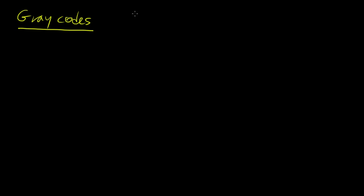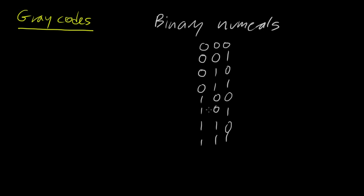Gray codes are different than the traditional binary numeral system that we're used to. So in binary numerals, what we're familiar with, if we have three bits, we have 0, 0, 0, and then 1, 0, 1, 0, 1, 0, 1. If we have a traditional binary numbering system like this, we go from 0 all the way up to...